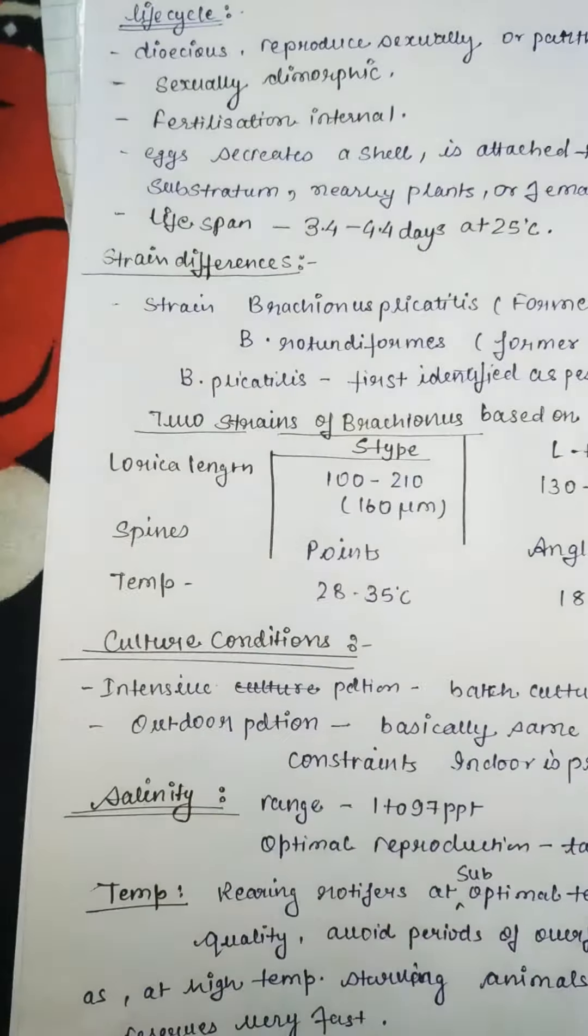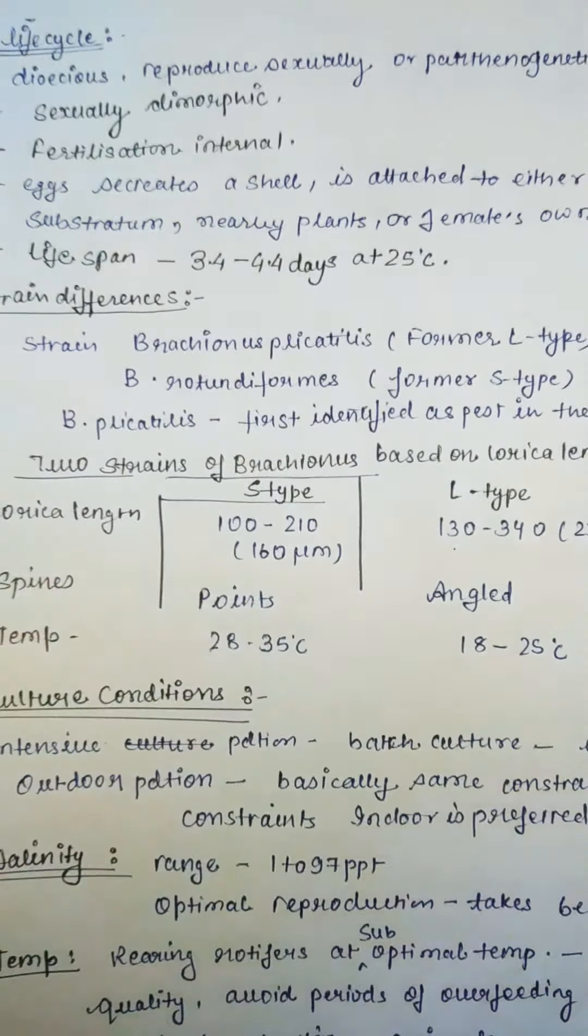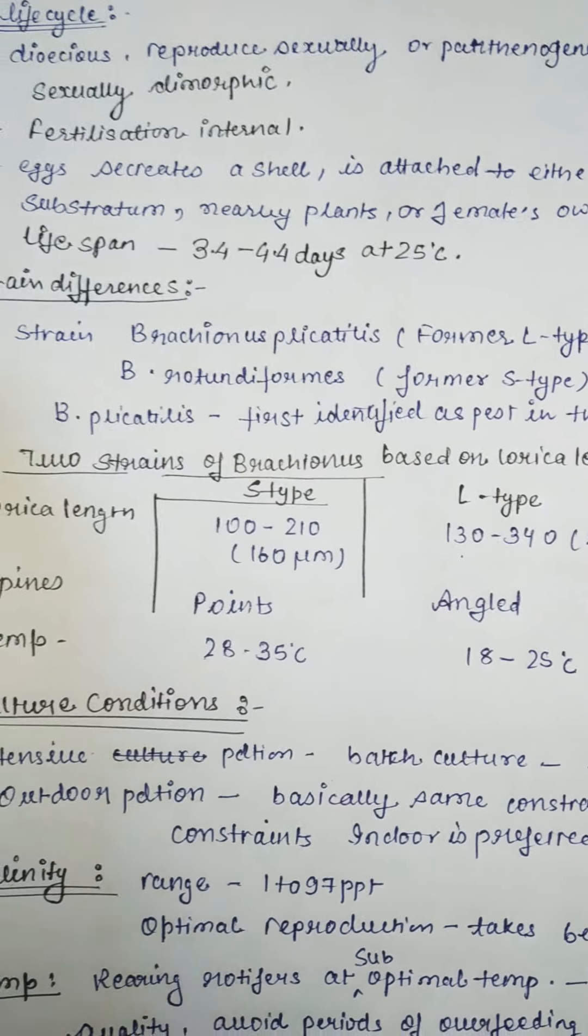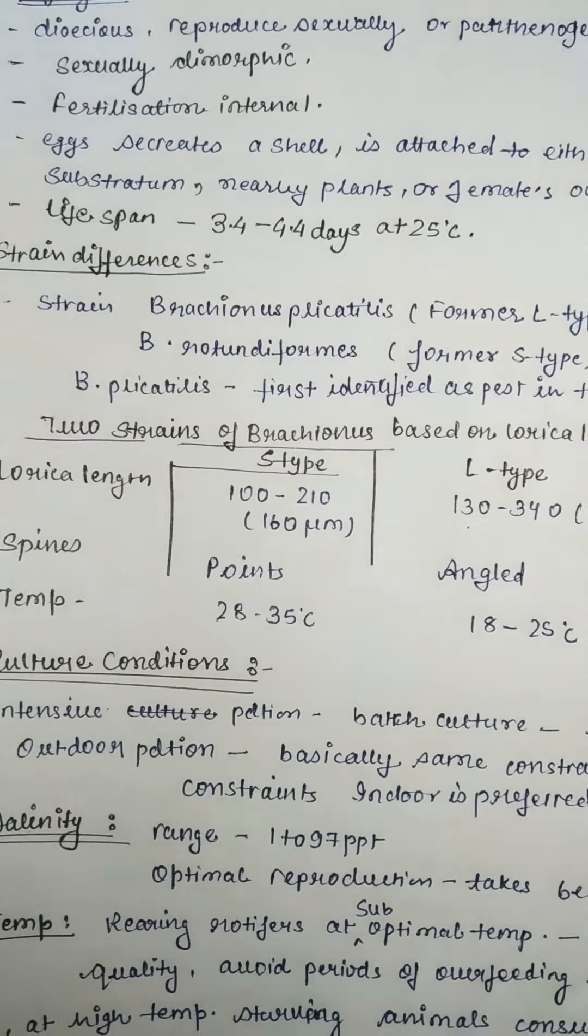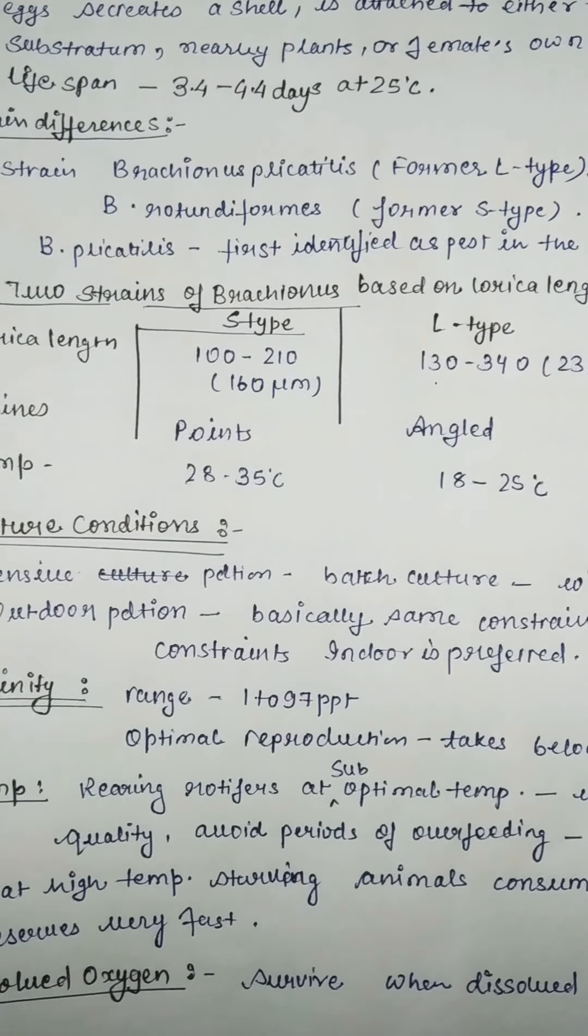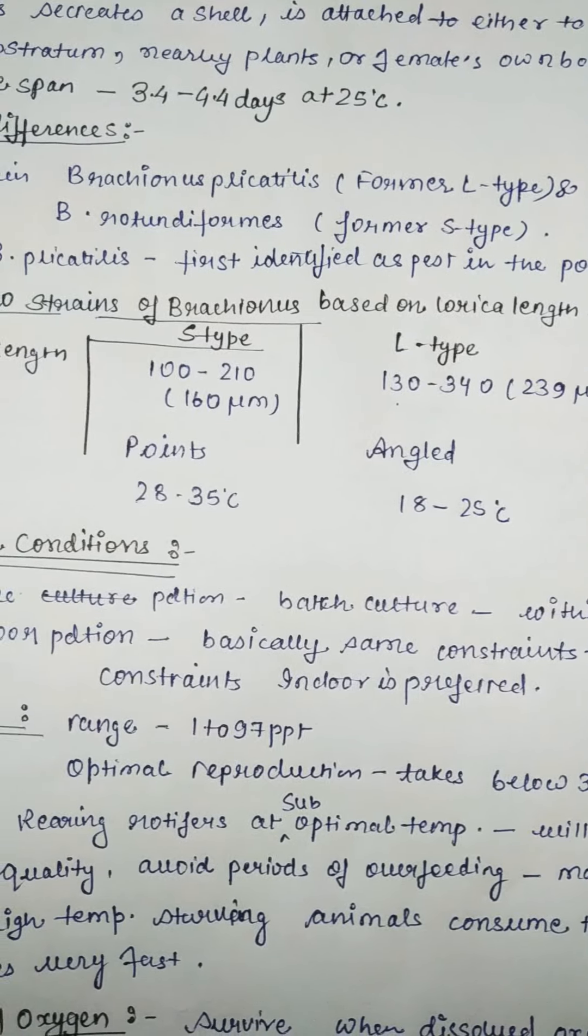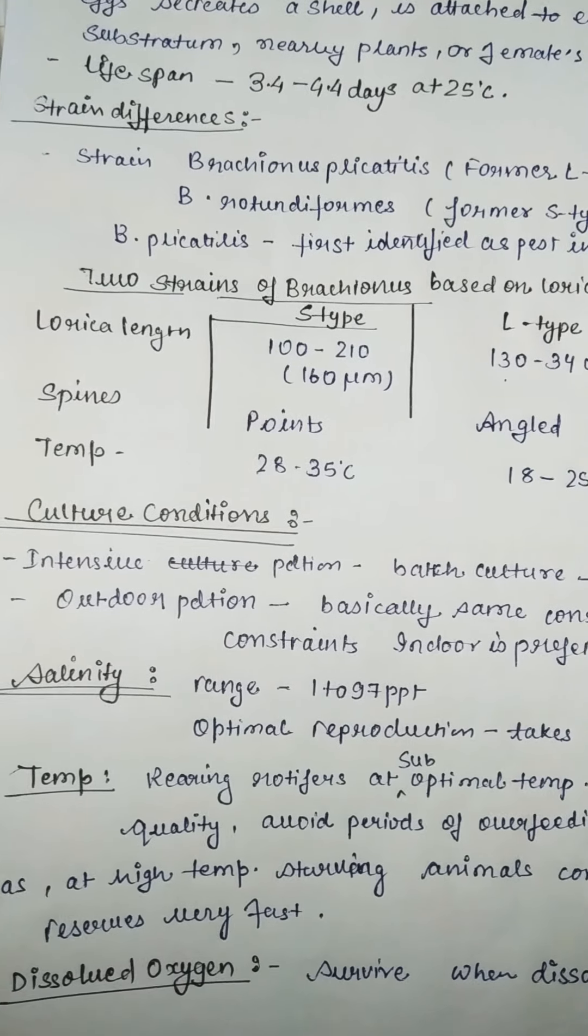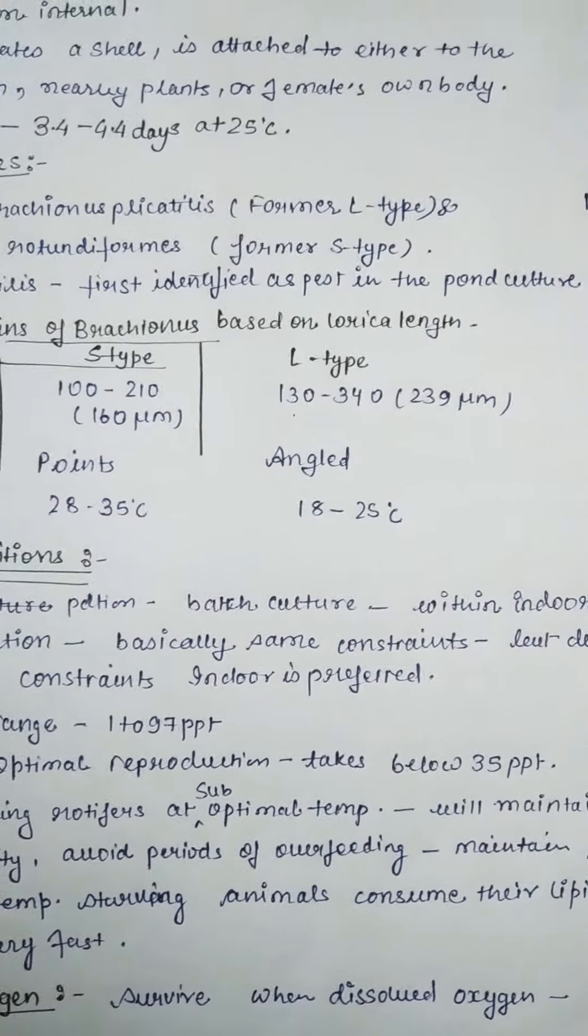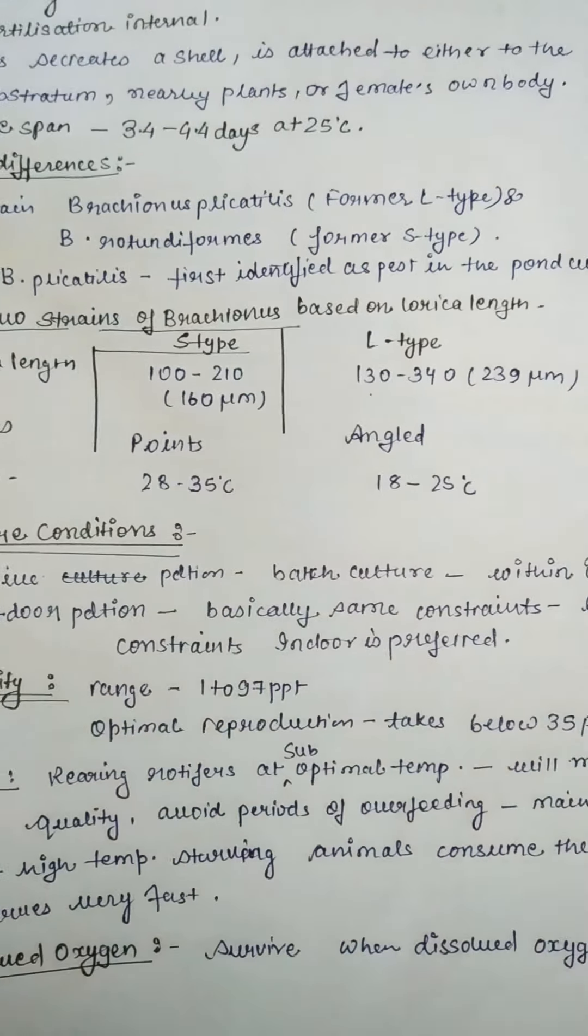Strain differences: there are many strains but the widely known strains are Brachionus plicatilis, or B. plicatilis, which is the former L-type, and B. rotundiformis, which is the former S-type. B. plicatilis was first identified as a pest in the pond culture of eel but now it is available for all fishes.